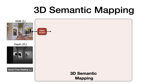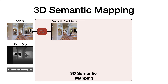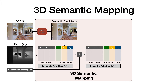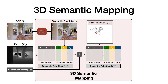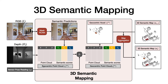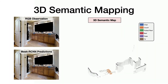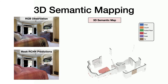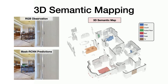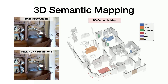At each time step, a Mask R-CNN pre-trained on internet images is used to get semantic predictions from the input RGB observation. The depth observation is used to compute an egocentric point cloud. Each point in this egocentric point cloud is associated with the corresponding semantic predictions. The egocentric point cloud is converted to a geocentric point cloud using geometric transformations based on the agent pose. This geocentric point cloud is then converted to a geocentric voxel representation using geometric projections, and aggregated over time using channel-wise max pooling to get the 3D semantic map.